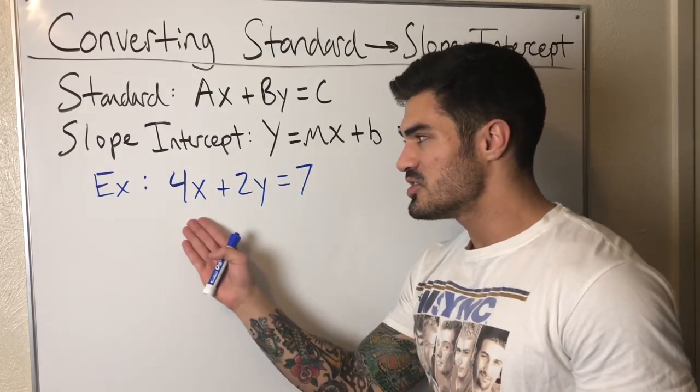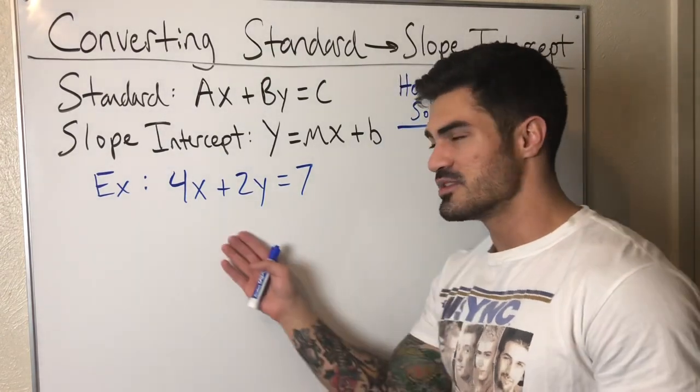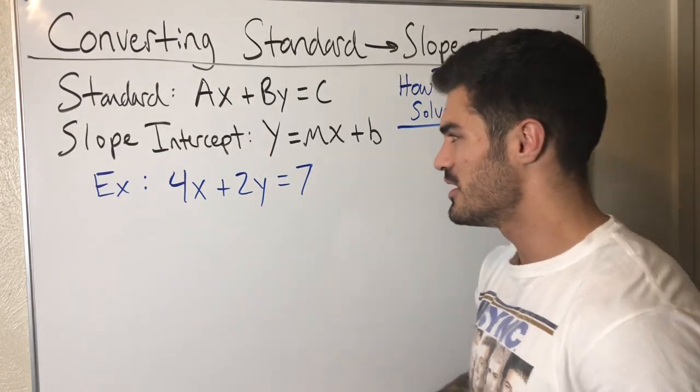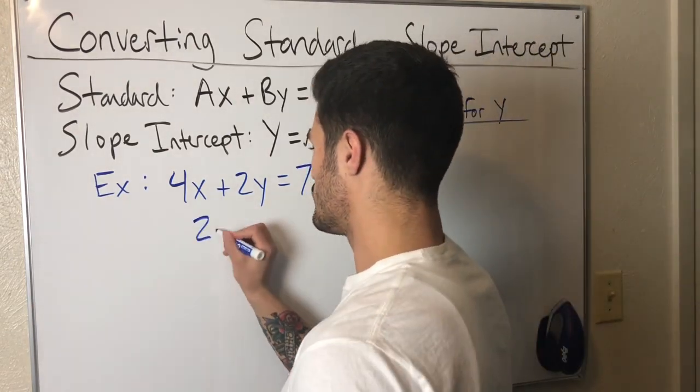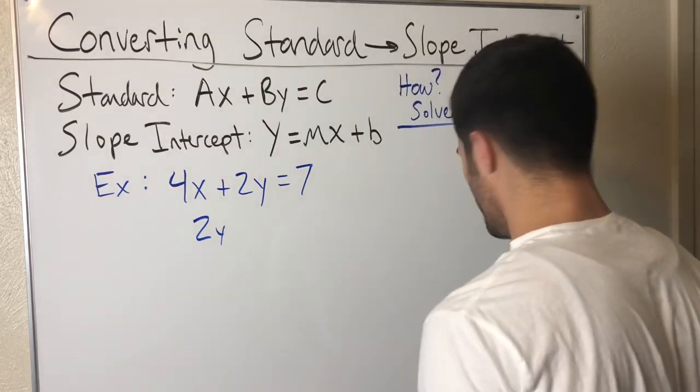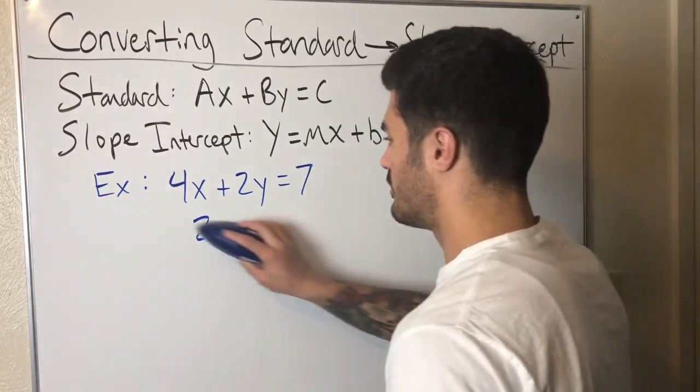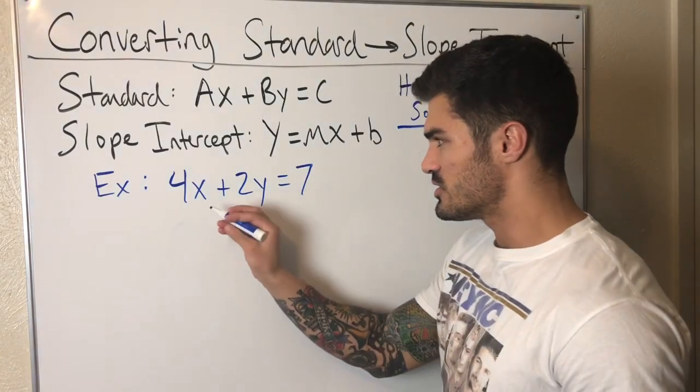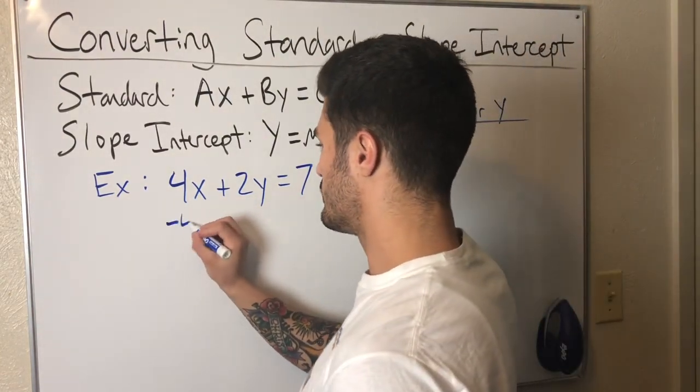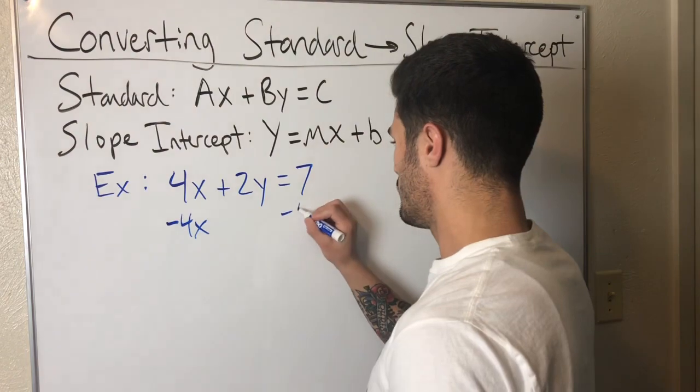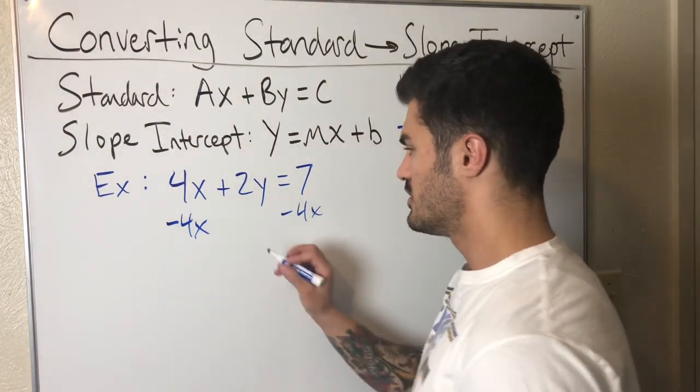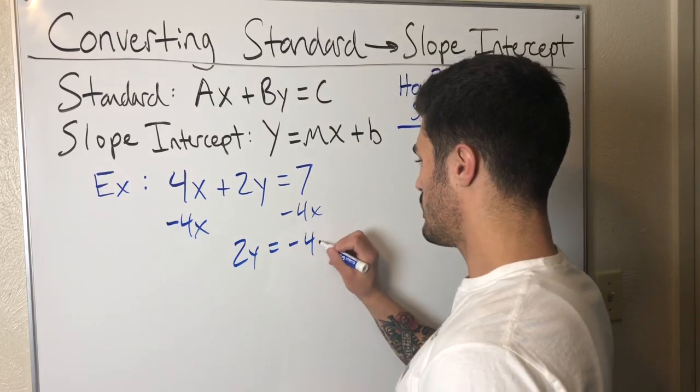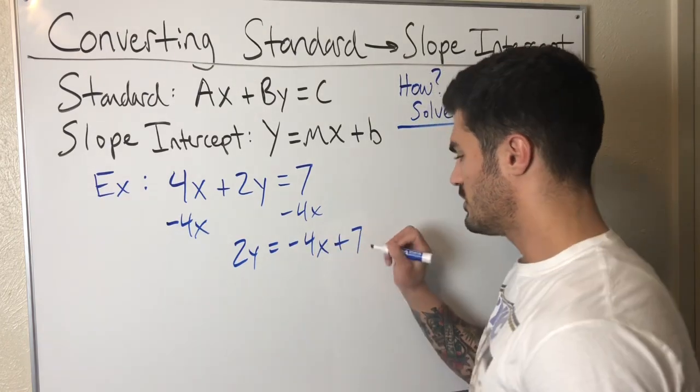That won't get us Y but that'll get us 2Y, and that's close, right? So the first thing I'm going to do is subtract—whoops, I'm skipping a step on y'all. So the first thing I'm going to do is subtract 4x from both sides. Minus 4x, minus 4x. So now where I'm at, I have 2Y = -4x + 7.